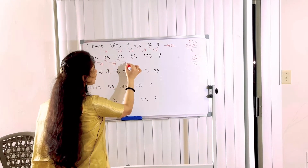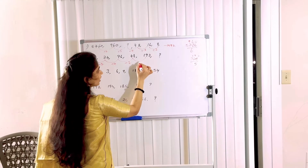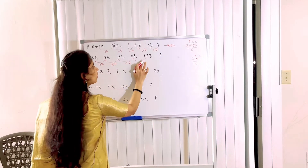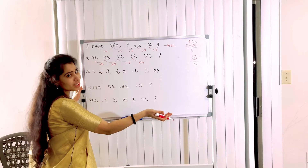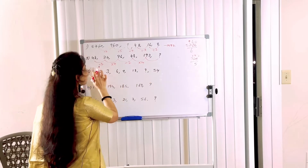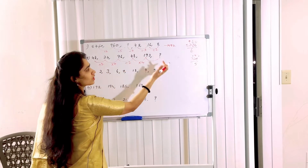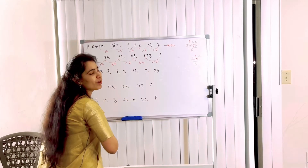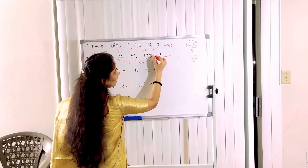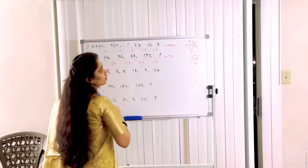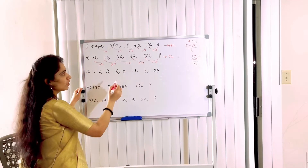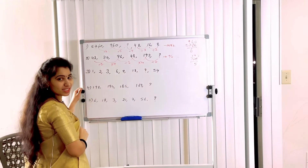Continuing: 96 divided by 2 gives 48. Next: 48 into 4 gives 192. So the sequence is: divide by 2, multiply by 4, divide by 2, multiply by 4. Therefore the next term after 192 is 192 divided by 2 = 96. Answer is 96.